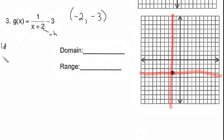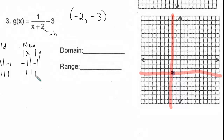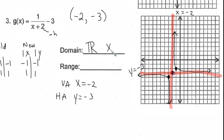The key points to the parent function are negative 1, negative 1 and 1, 1. I'm not multiplying anything to x or y, so the directional points do not change. I go out negative 1, down 1, out 1, up 1, and draw the graph. The vertical asymptote is at x equals negative 2, and the horizontal asymptote is at y equals negative 3. The domain is all real numbers but x is not equal to negative 2, and the range is all real numbers but y is not equal to negative 3.